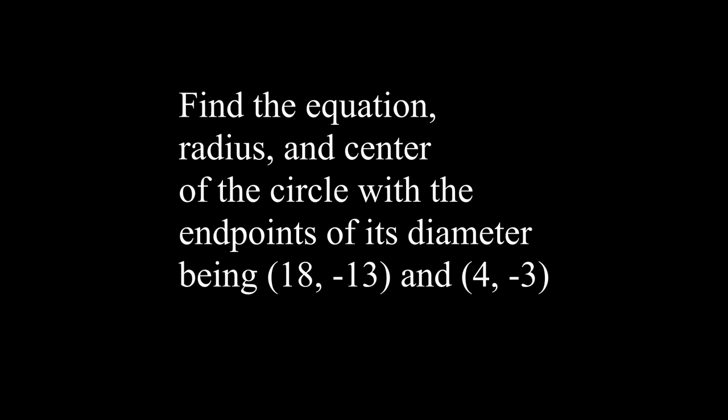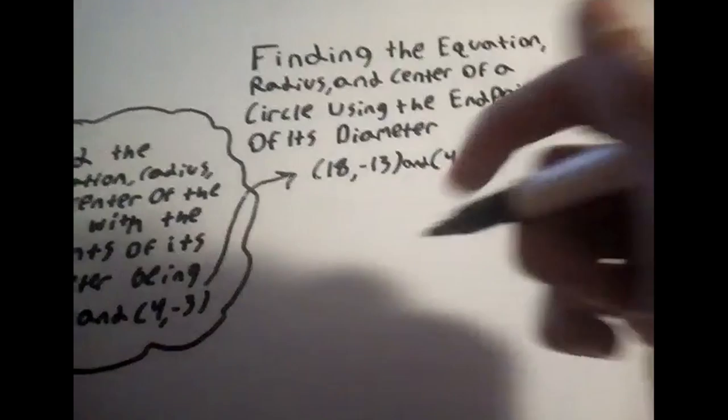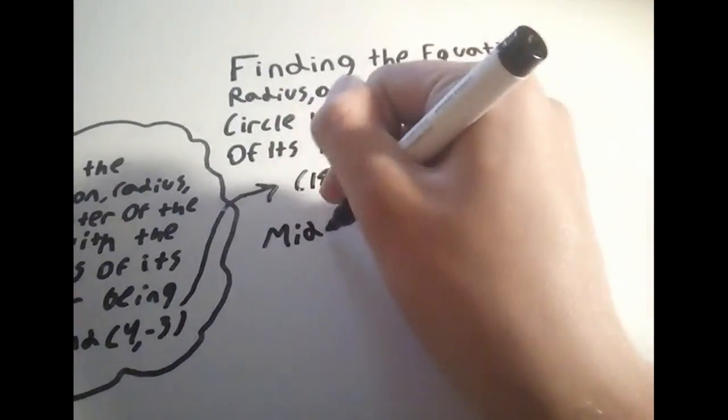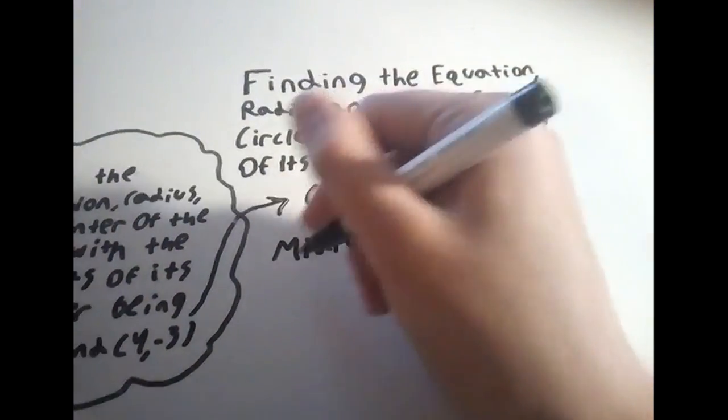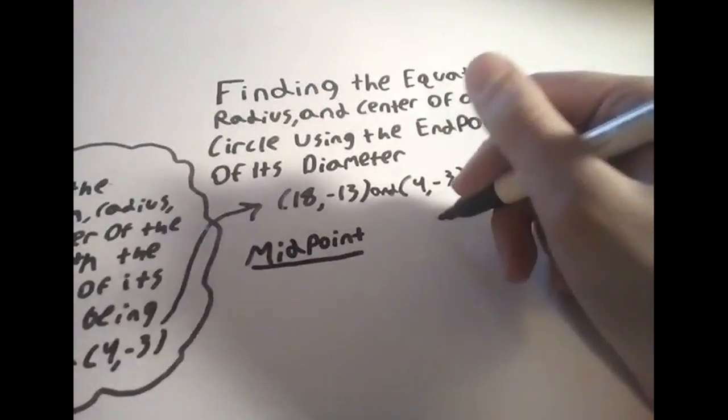For our next example with circles, we only have the endpoints of the diameter, but we're still tasked with finding the equation, radius, and center. While this may seem like not enough information, it's actually the perfect amount when using two formulas. These are the midpoint and distance formulas.